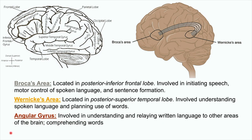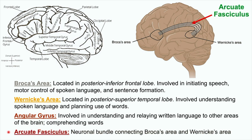Another very important structure for language is the arcuate fasciculus. The arcuate fasciculus is a neuronal bundle or connection that connects Broca's area and Wernicke's area.